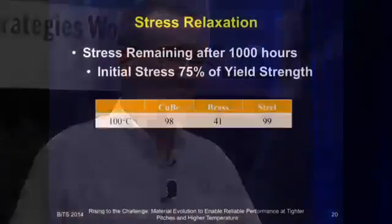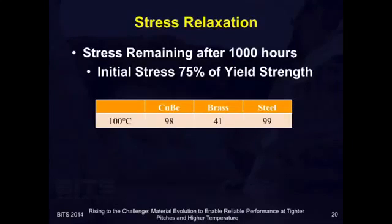This is some of the data we have for that. In this case, we're taking sample material, stressing it to a level of 75% of the yield strength, holding a temperature for 1,000 hours at 100°C. The beryllium copper and the steel have about 98–99% of the original stress remaining, meaning they have very good resistance to temperature and will give you repeatable results when exposed to elevated temperature.